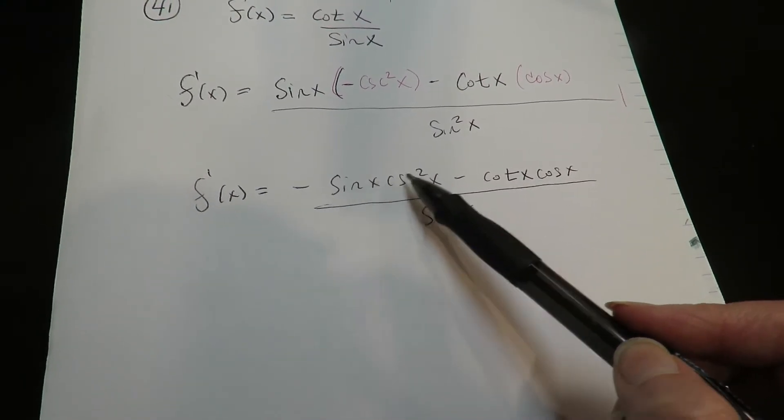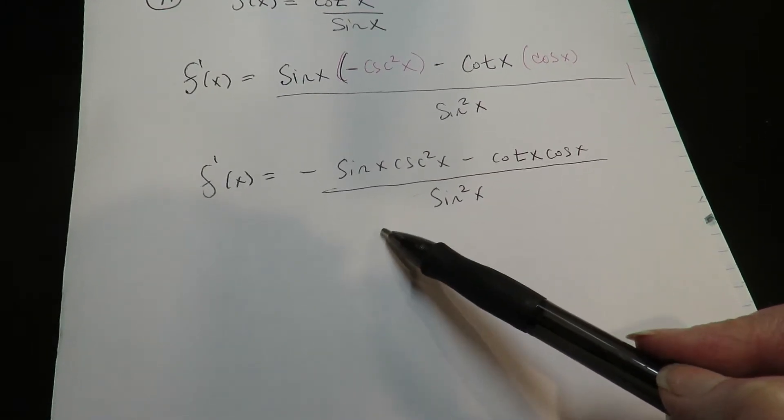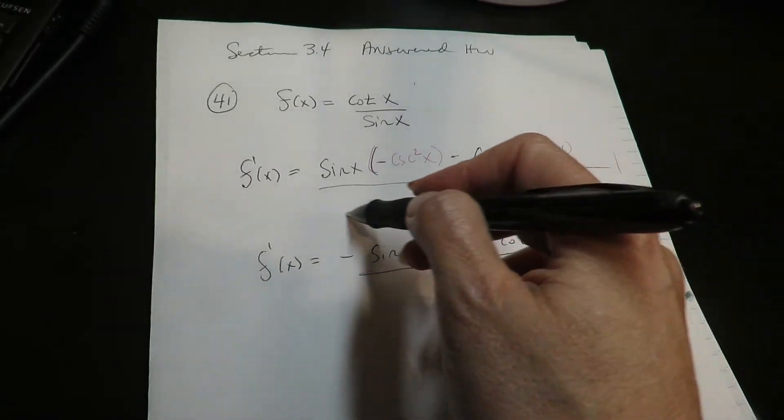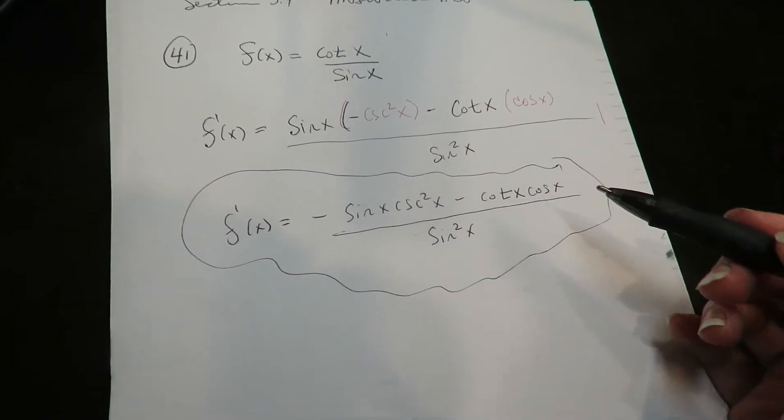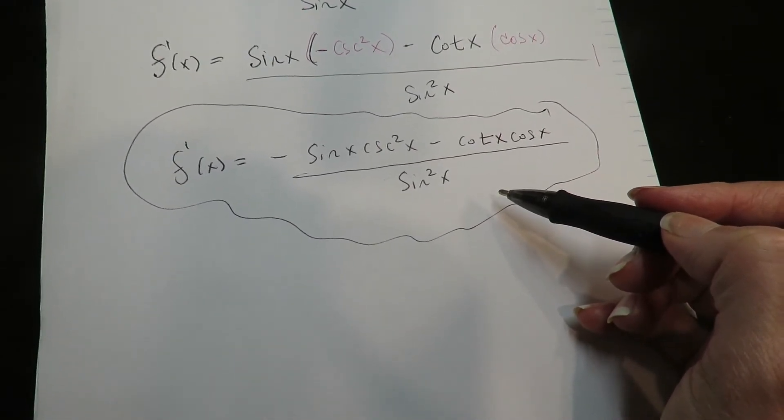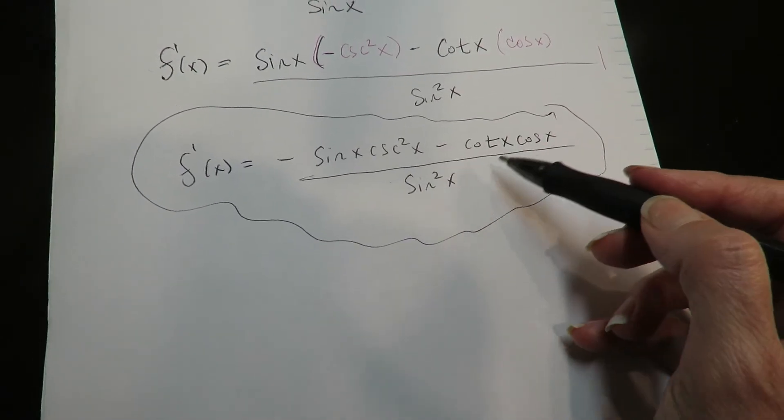Okay, so what you could do if you wanted to is convert everything to sines and cosines and then collapse the complex fraction, but I'm not going to do it. I'm going to leave the final answer here. I said this in the lecture and I'm saying it in the homework: you're free to use the identities to convert it to the answers in the back of the book or not. I'm indifferent on that.